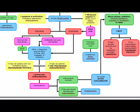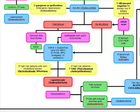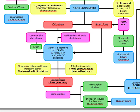If they're not high-risk, we've admitted them and done supportive care for 24 to 48 hours. Then we're going to wait about 6 to 12 weeks and do a laparoscopic cholecystectomy. After we admit them, we're going to put them NPO, do NG suction, give IV fluids, antibiotics, and analgesia, then wait 6 to 12 weeks before the laparoscopic cholecystectomy.